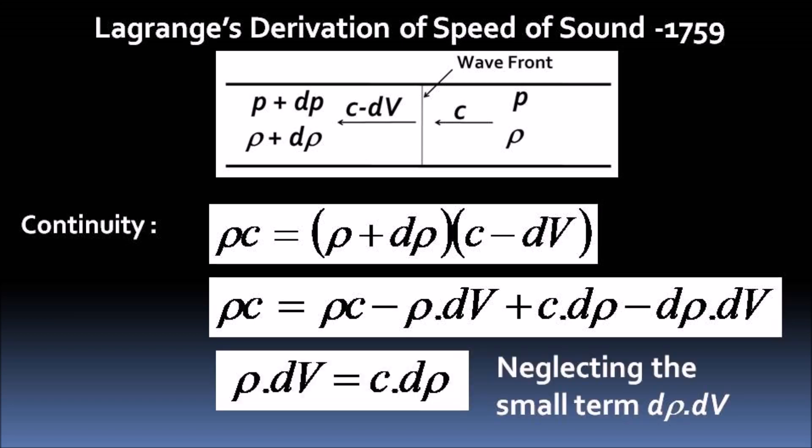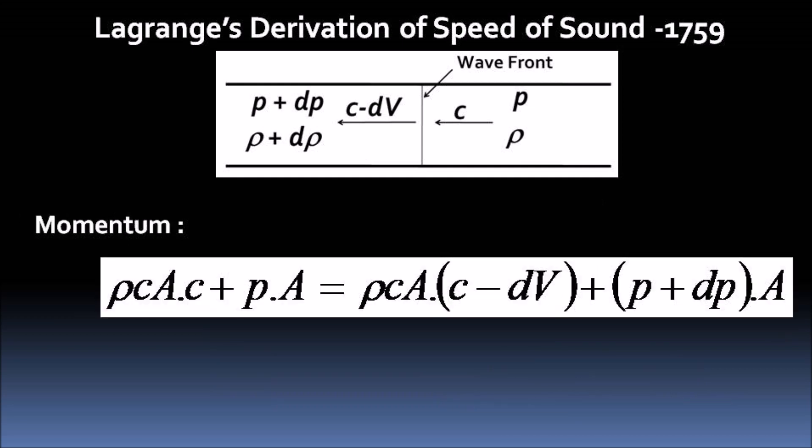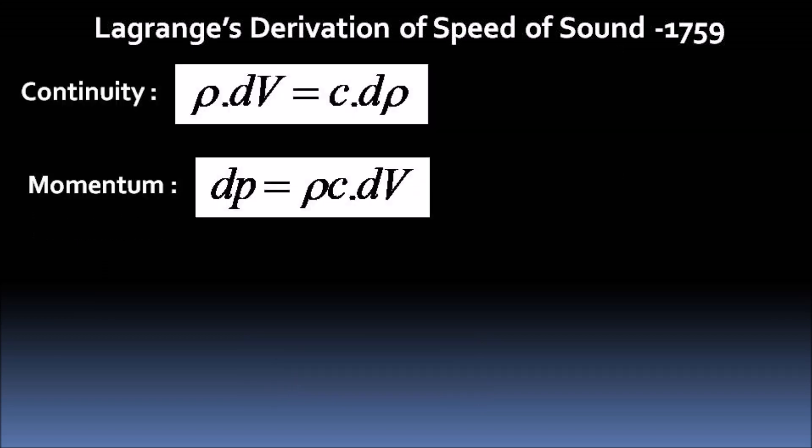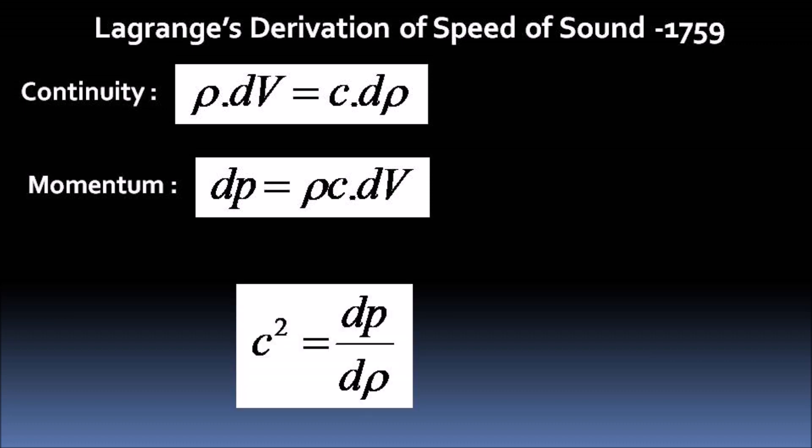Neglecting the small term d rho into dv, a simple expression for continuity is arrived at. The momentum conservation across the wavefront gives a simplified relation dp is equal to rho c into dv. Now we have continuity relation and momentum relation eliminating dv from both the relations. We get an expression for speed of sound in a differential form as c square is equal to dp by d rho.